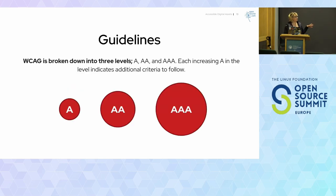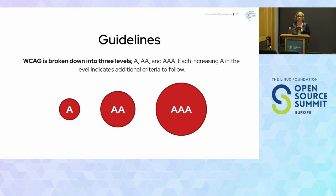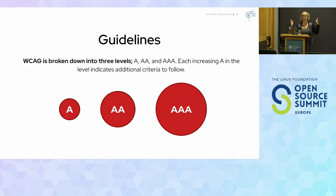The guidelines are broken down further. We have the A, the double A, and the triple A. The A is minimal compliance — if your website does not meet at least this level, your website is really challenging for folks with disabilities to use. The double A is the acceptable compliance level right now. WCAG 2.1 double A is the acceptable criteria — it means that our websites and assets are usable and understandable by the majority of people.